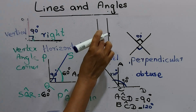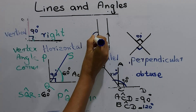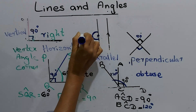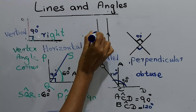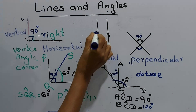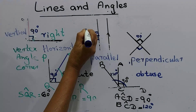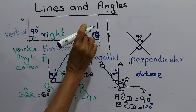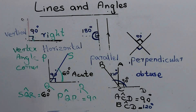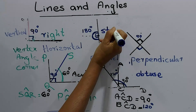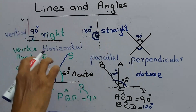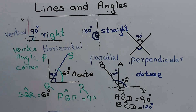I will show you another angle. Look at this line — this is the vertex. If we imagine a line here, this side is 90 degrees and that side is 90 degrees. So the value of this angle is 90 plus 90 equals 180 degrees. We call this a straight angle. The value of a straight angle is 180 degrees.